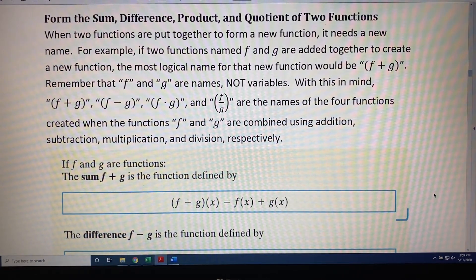For example, if two functions named f and g are added together to create a new function, the most logical name for that new function would be f plus g in parentheses. Remember that f and g are names, not variables.